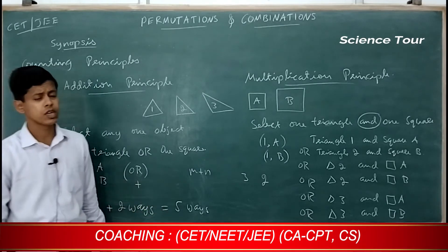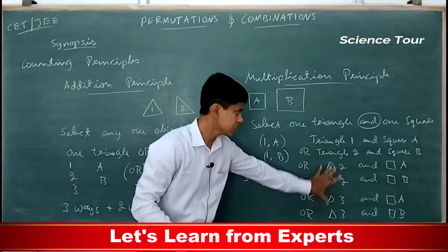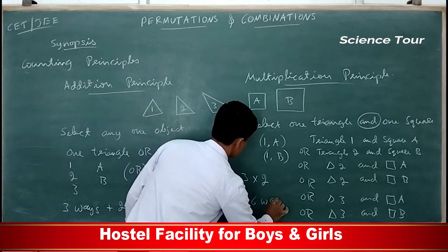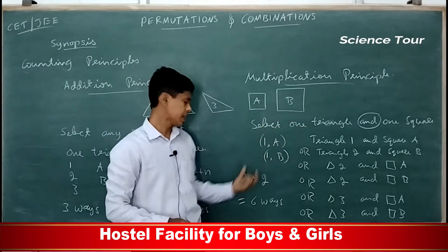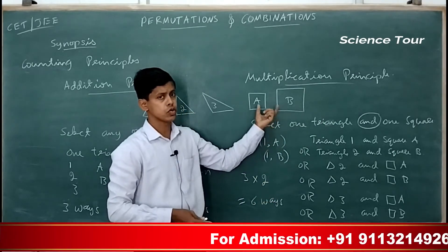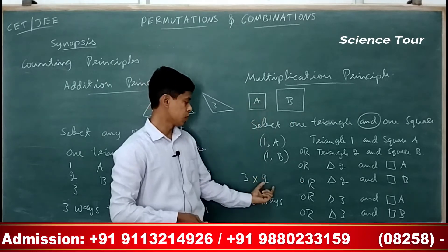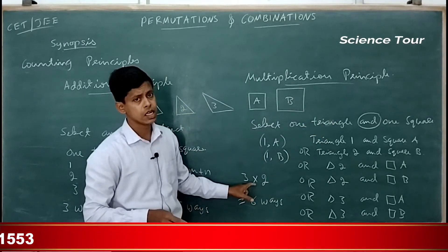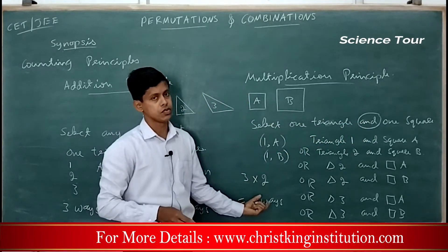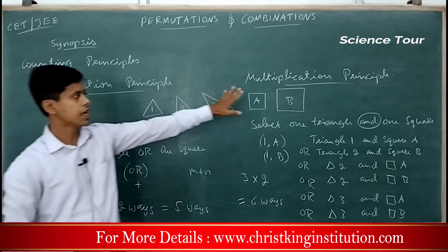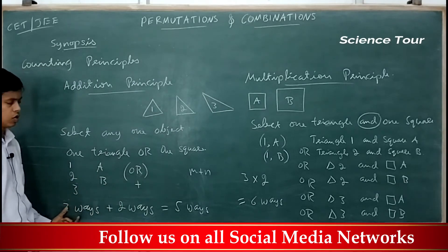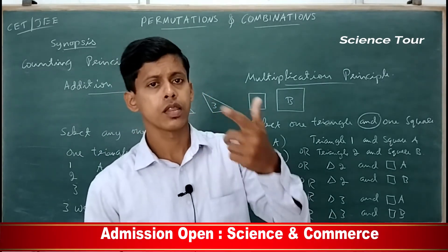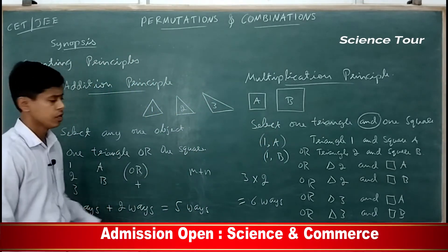How do you calculate that? There are three triangles and two squares. How many ways can you select one triangle? Three ways. How many ways can you select one square? Two ways. If you add, you get only five ways, but we have to justify six ways. So you multiply. Three ways into two ways gives you six ways.